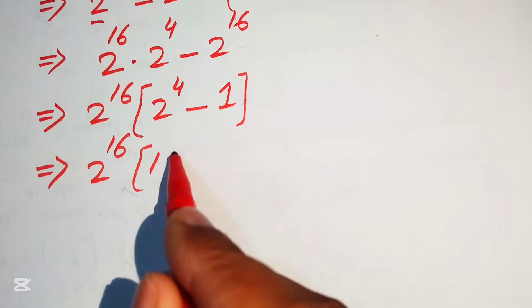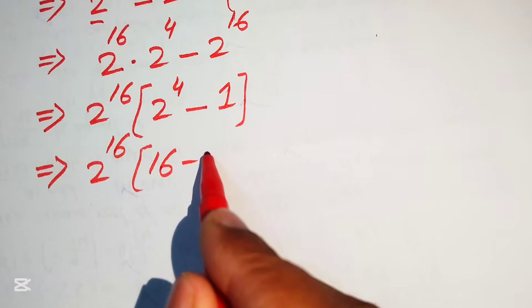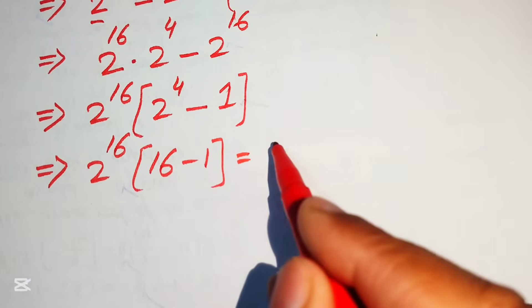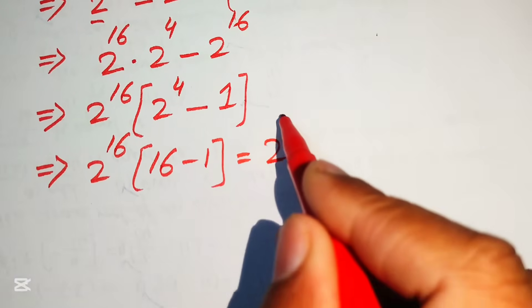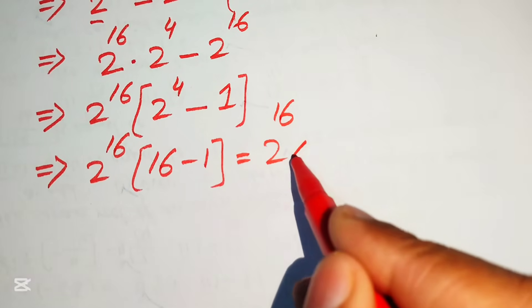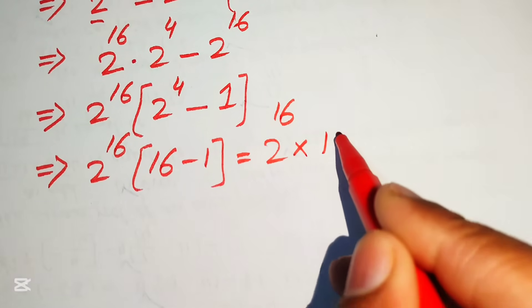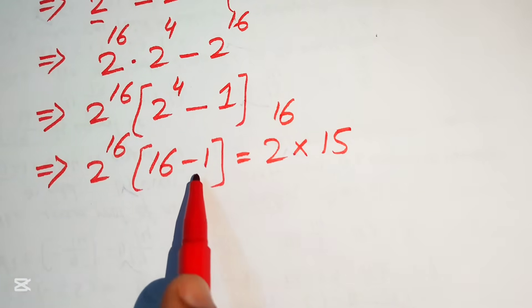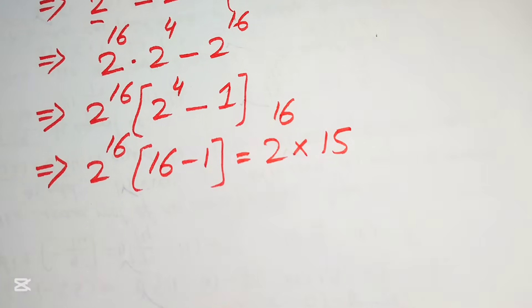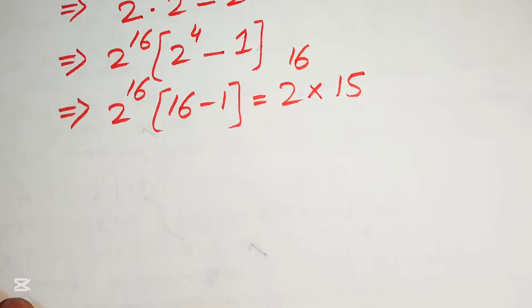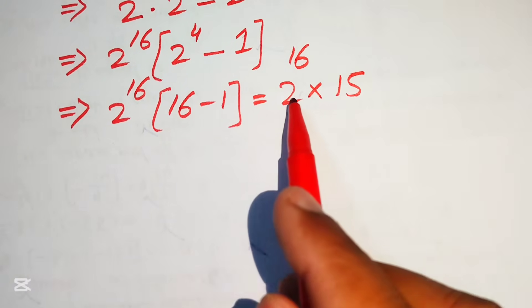This gives us 2 to the power of 16 multiplied by (16 minus 1). Here 16 minus 1 becomes 15, so the expression is 2 to the power of 16 times 15.